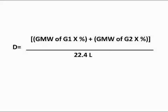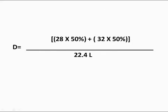Same equation. So the density of a 50% concentration, we're going to put the gram molecular weight of nitrogen times the concentration, and the gram molecular weight of oxygen times its concentration.